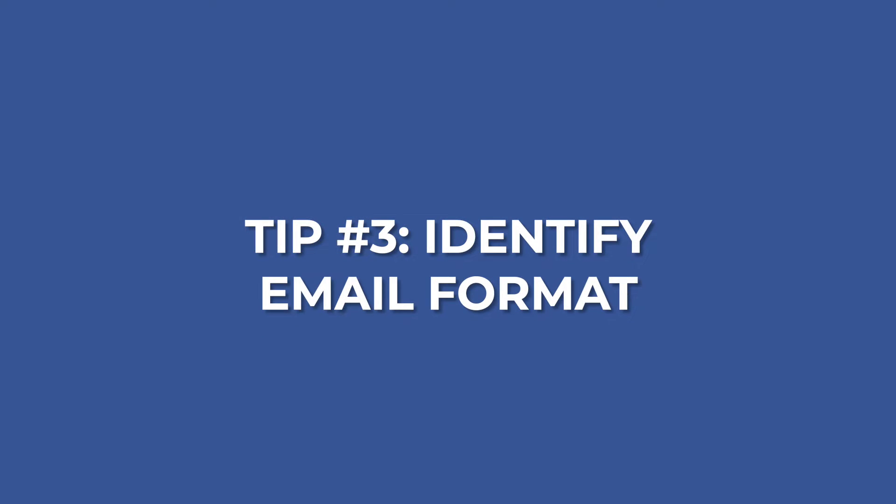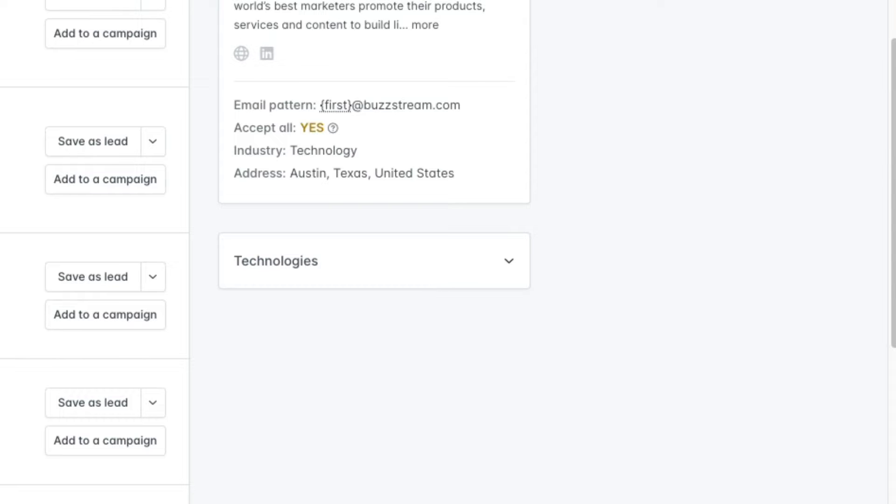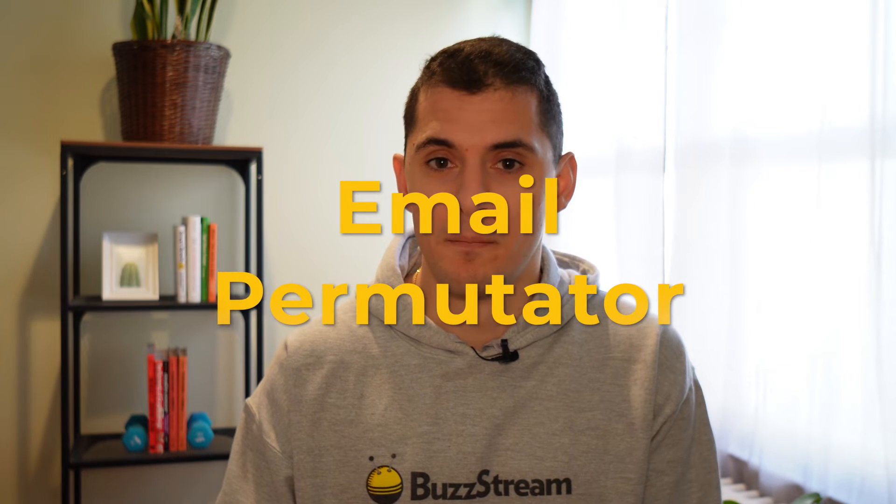Tip three is to find and identify the email format. A lot of different sites will group and format their emails in the same way. For instance, ours at BuzzStream is firstname@buzzstream.com. So what you're looking for is the specific format. The aforementioned tool Hunter will actually tell you the format, which is super helpful. But if you don't know what that format is and Hunter's not working, you can use something called an email permutator.